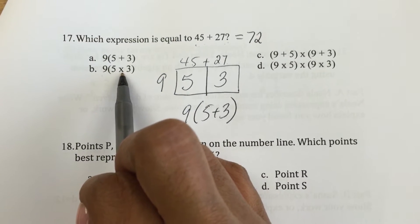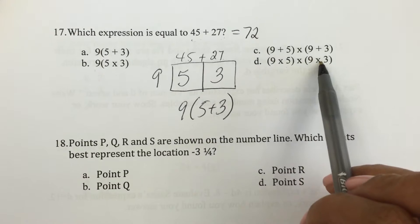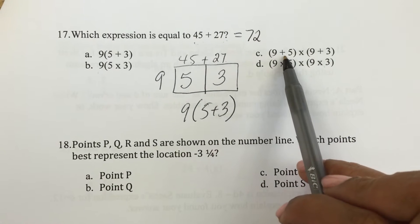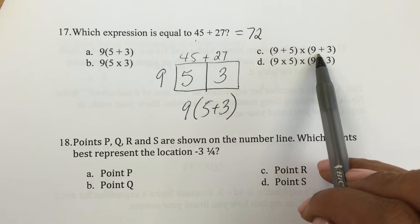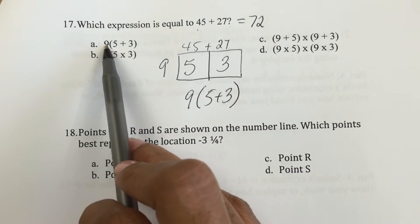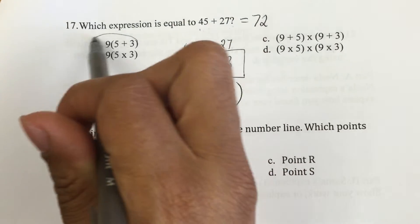So you could have tried all of these out to see which one gives you 72. 9 times 15 doesn't give me 72. 45 times 27 doesn't. 14 times 12, nope, that's way more. And this would have been the only one, 9 times 8, that would have given you 72.